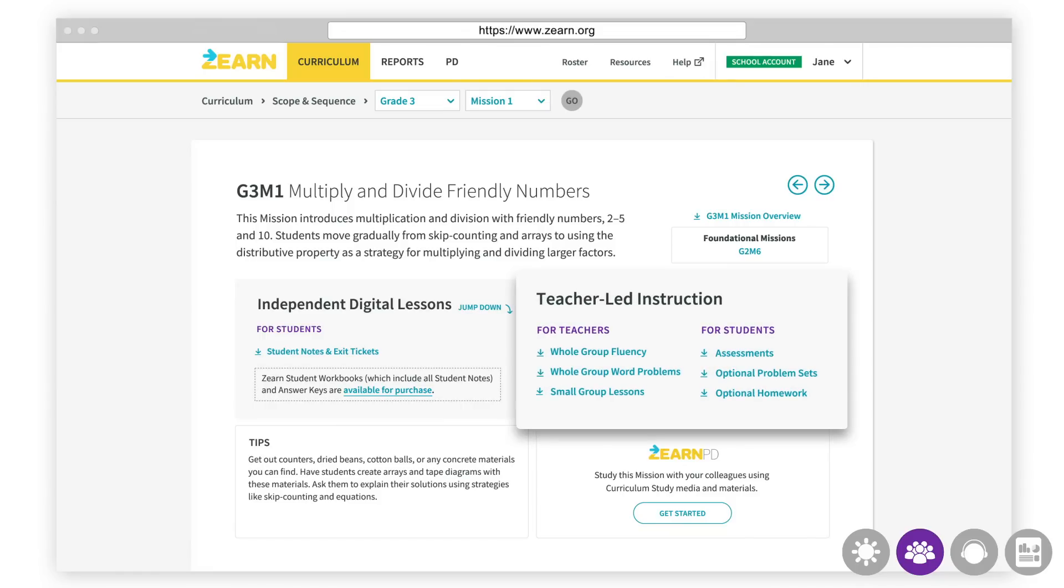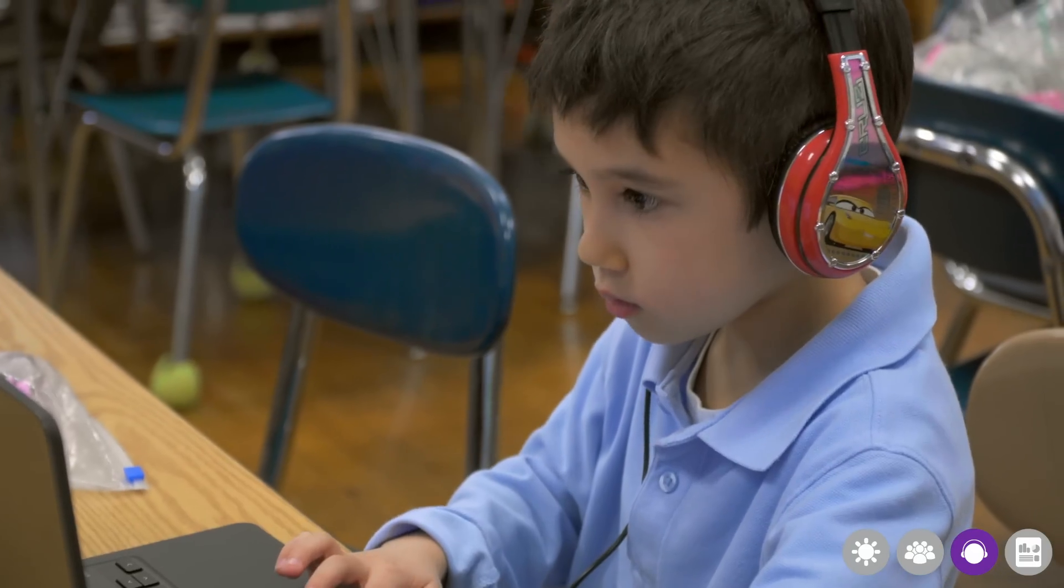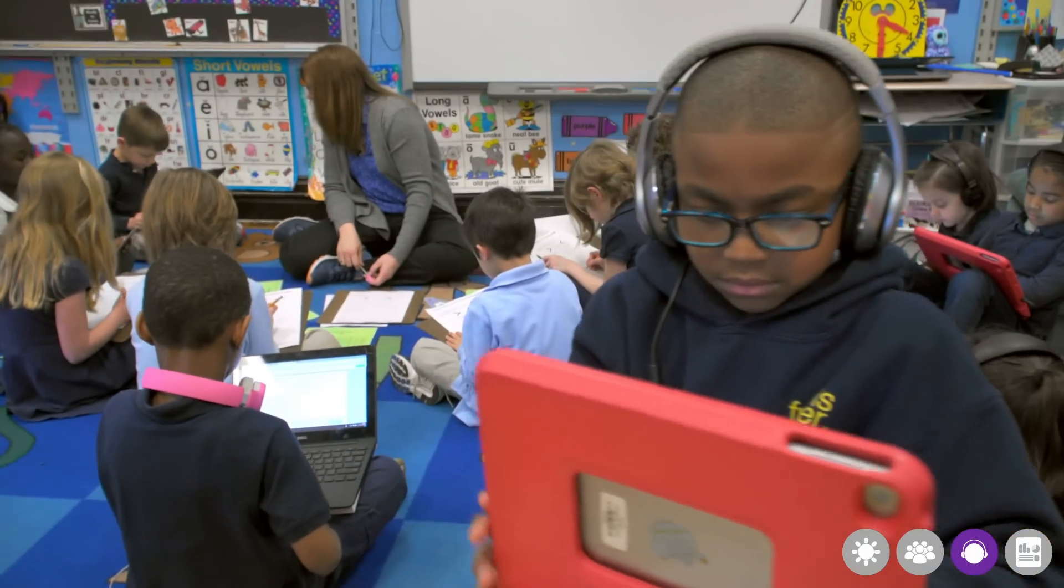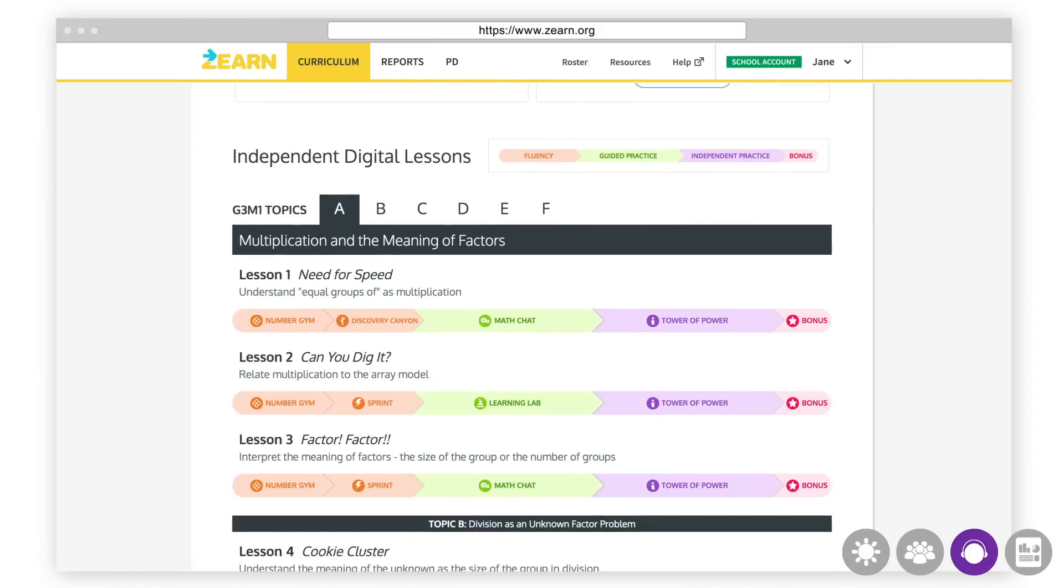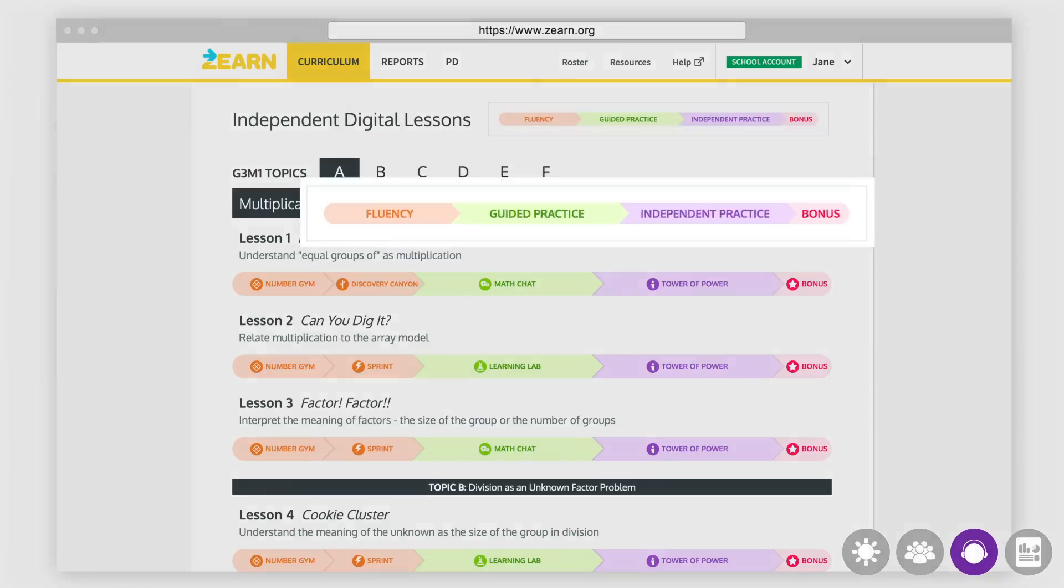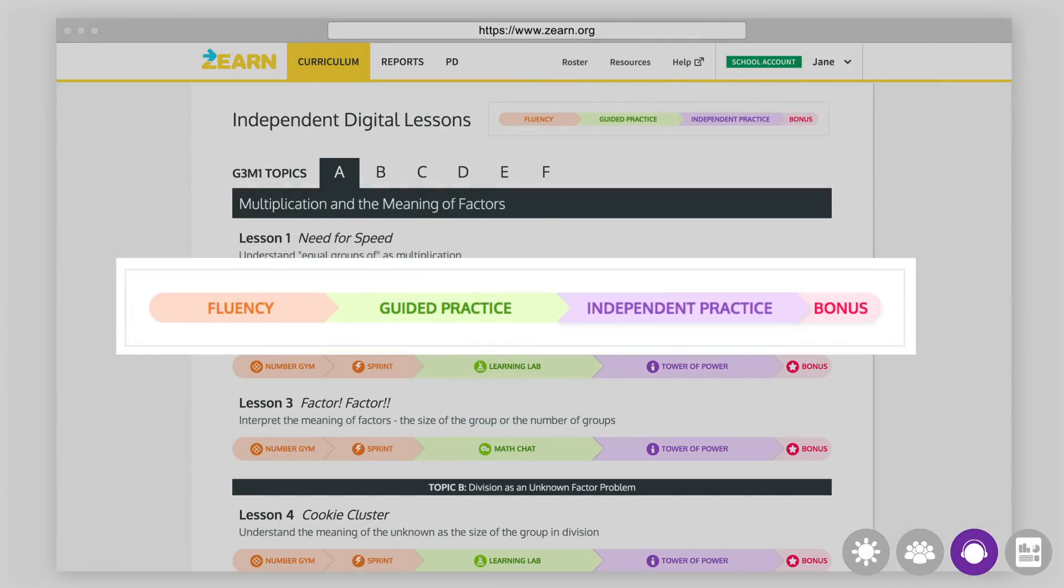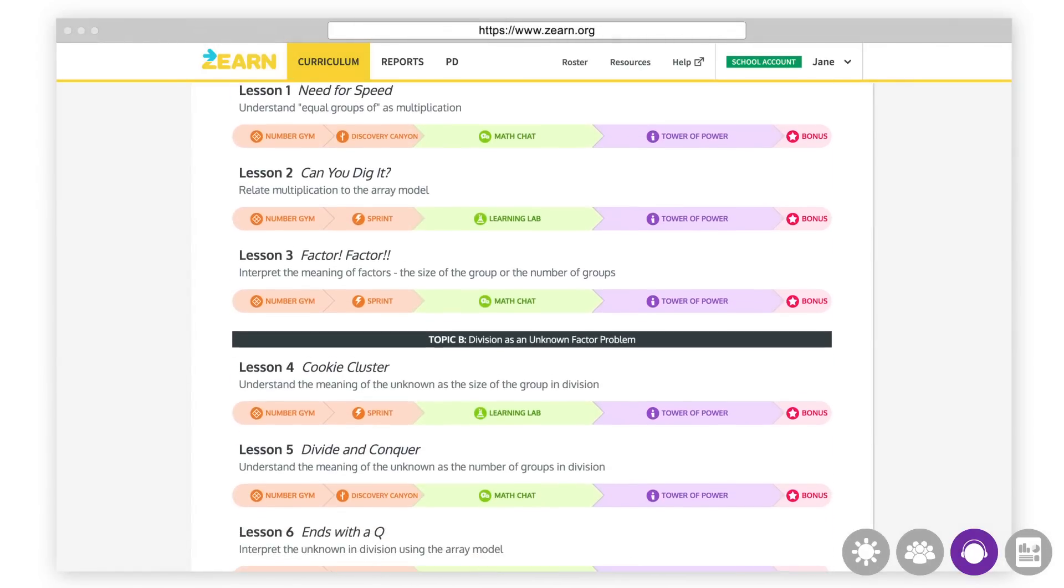While half the class learns with their teacher and classmates in a small group, the other half of the class learns with personalized and engaging independent digital lessons. By rotating between these two groups each day, all students have multiple ways to engage in learning, acquire knowledge, and demonstrate understanding. There are several components of an independent digital lesson, each designed to ensure students experience a balance of procedural fluency, conceptual understanding, and application work. Students work through each component of the digital lesson at their own pace, giving every student the time they need to deeply understand new content they are learning.